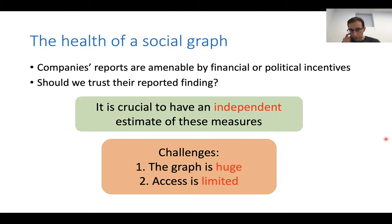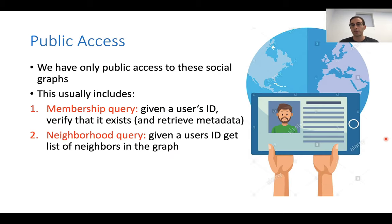And there are two main challenges that come with this. One is that the graph is huge. And this is a challenge not only computationally, but also because the access to this graph is limited. So we're not just given a file with all the information of the network. Instead, the way we can access these networks is by what's called the public access or external access. They usually include two things.